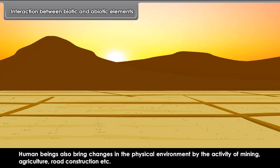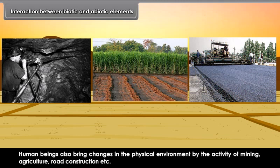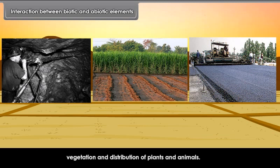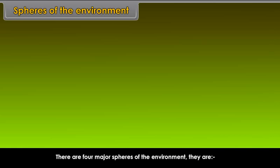The interaction between the elements of physical and biological environment are responsible for all variations in the soil, vegetation and distribution of plants and animals. There are four major spheres of the environment: lithosphere, hydrosphere, atmosphere, and biosphere.